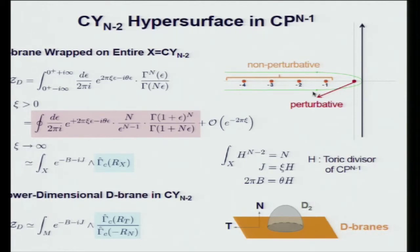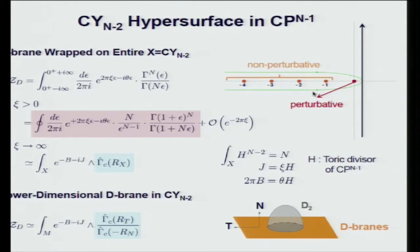The residues at negative poles correspond to non-perturbative (worldsheet instanton) corrections, while the residue at the origin gives the perturbative correction to the central charge. Taking the large volume limit suppresses instanton corrections, and using the toric divisors of CP^{n-1}, one can rewrite the expression in a form where the Gamma class appears rather than the A-roof genus. A similar computation for lower-dimensional D-branes wrapping holomorphic cycles also shows the ratio of Gamma classes rather than A-roof genera.